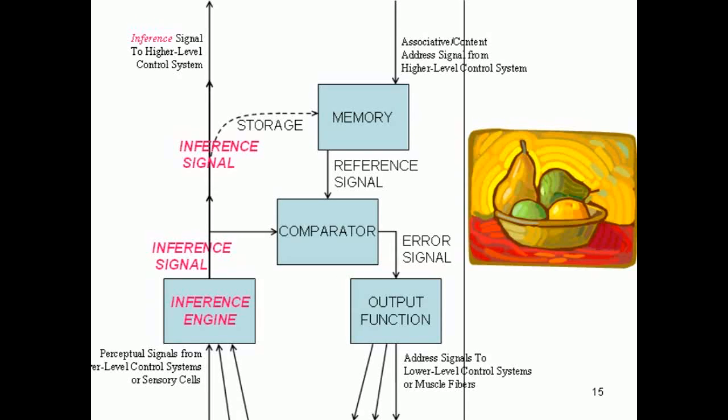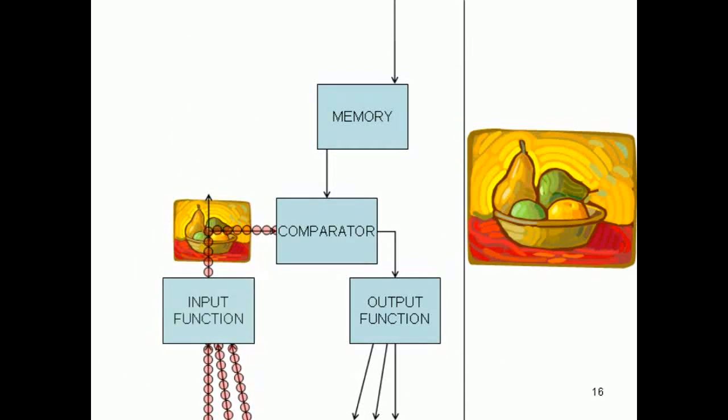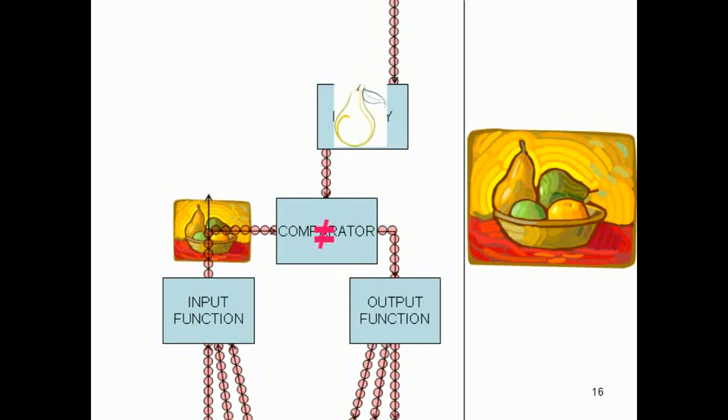To illustrate how the levels work together: Suppose that the configuration level module, which is inferring the fruit bowl, gets Googled by a higher-level module with an address signal eliciting pear from its memory. In other words, it's being told, control a perception, that is, obtain and maintain a perception of a pear. Not close enough! Your configuration level module's comparator sends out an error signal, telling its output function to address various sensation-level modules. But wait a minute.